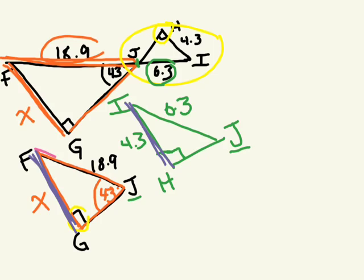And then we have two other measurements. We know 18.9. That corresponds with which side length in the second triangle? 6.3. Perfect. Which is I, J. Good. So now we can set up our ratio.